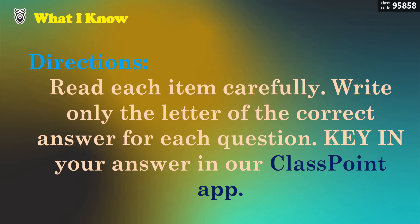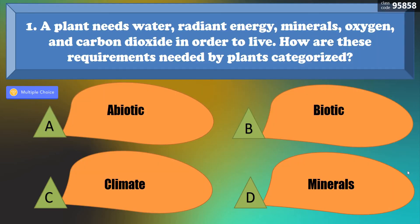Before we proceed, let us have this quiz review — What I Know. Directions: Read each item carefully. Write only the letter of the correct answer for each question and key in your answer in our class point-up with a class code of 95858. Ready? Let's have number one. A plant needs water, radiant energy, minerals, oxygen, and carbon dioxide in order to live. How are these requirements needed by plants categorized?